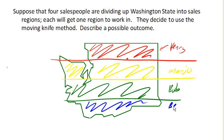Now, while this method works really well for dividing cakes, you can see that this is a pretty lousy method for dividing a state. Because now each person is going to have to drive all the way from the west side to the east side of the state. This is probably a pretty bad method for dividing up a state, but pretty good for dividing up cake.